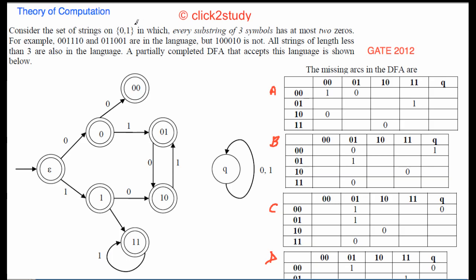Let's begin the next problem in theory of computation. The problem is: consider the set of strings on {0,1} in which every substring of three symbols has at most two zeros. So if you take any string and take a substring, and there are three symbols, it has at most two zeros — it cannot have more than two zeros.